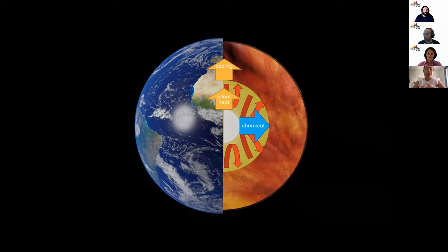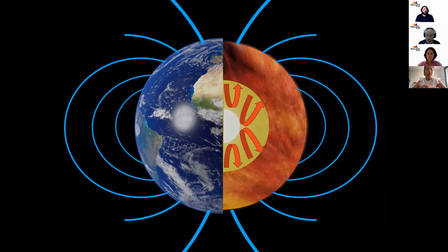So, we have all this vigorous convection occurring, and this leads to a reference state in the liquid outer core, which is really well mixed and homogeneous. And its temperature profile is close to adiabatic. All of this convection drives a process called the geodynamo, which generates our magnetic field and protects us from solar winds and is responsible for lovely things like the northern lights.